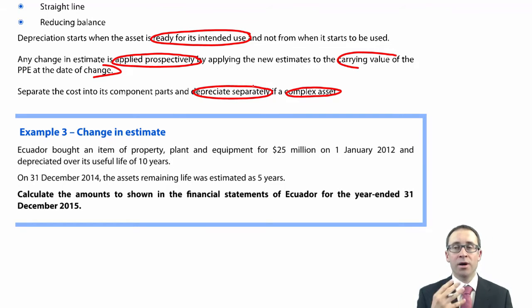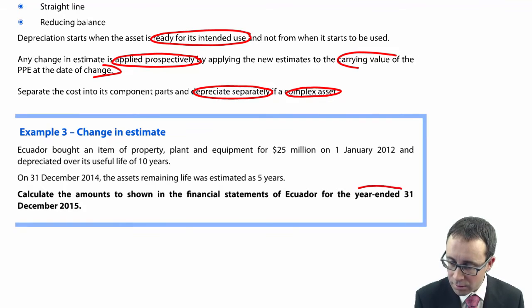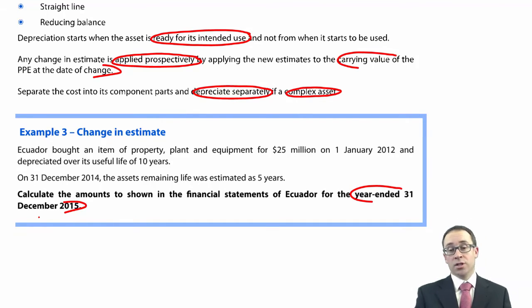May crop up in P2. Personally, based on experience and past exams, I think the change in estimate is more likely to appear. So what have we got here? It says here, calculate the amounts to be shown in the financial statements of Ecuador. So again, SFP, profit or loss, OCI, anything else, statements of change in equity, statements of cash flows if you so wish. The main focus is SFP and profit or loss, because that then feeds in numerically to what you tend to see within the group accounts question in question one.